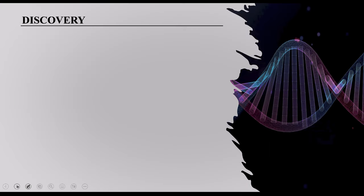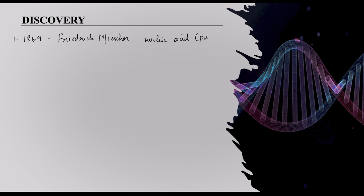First we are going to see about the discovery — how this DNA was discovered. In the year 1869, there was a scientist called Friedrich Miescher. He isolated the nucleic acid from pus cells, which are WBC cells. He named this nucleic acid as 'Nuclein.'